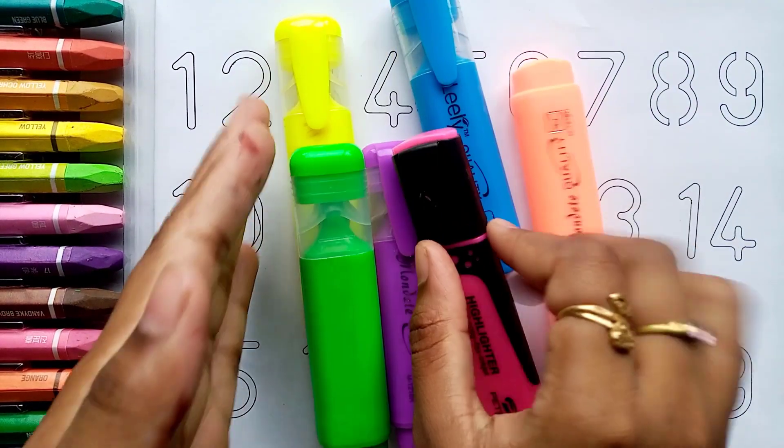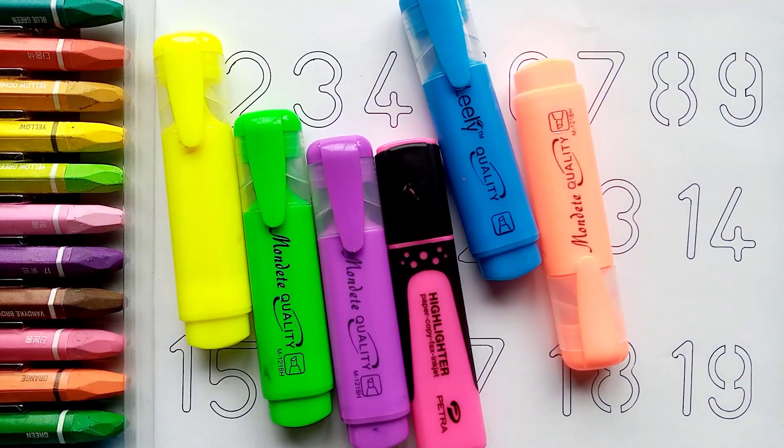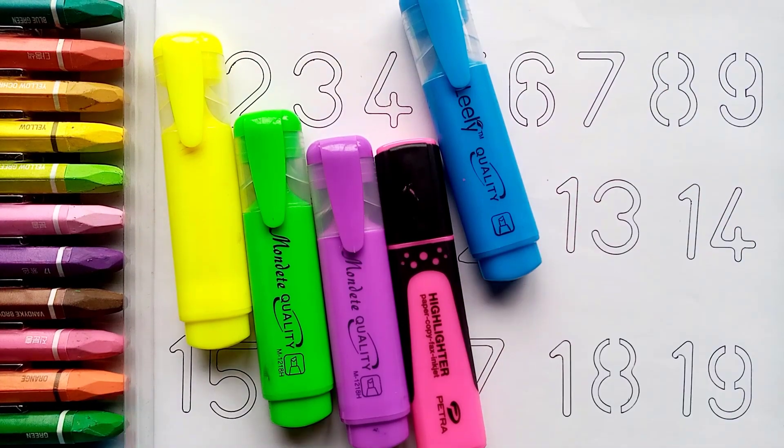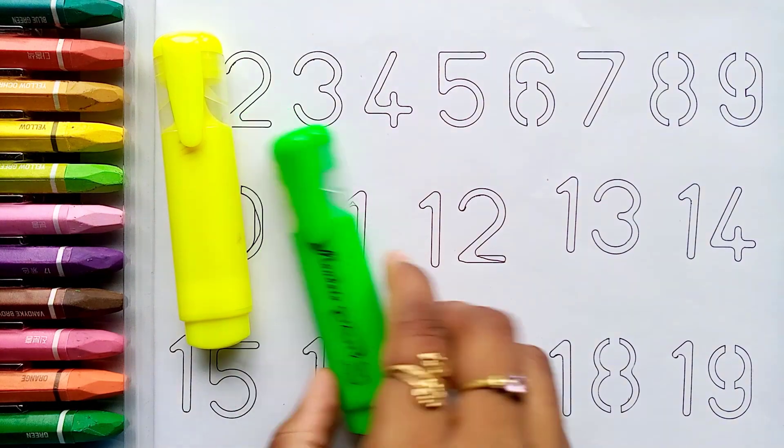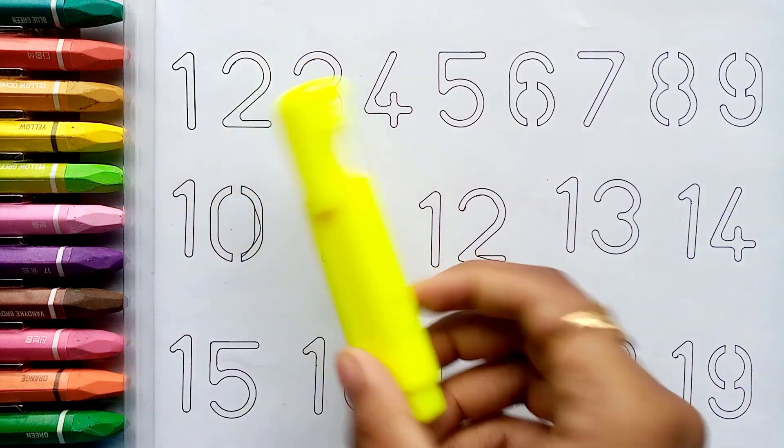Let's learn some colors. Orange color. Sky blue color. Pink color. Purple color. Yellow green color. Yellow color.